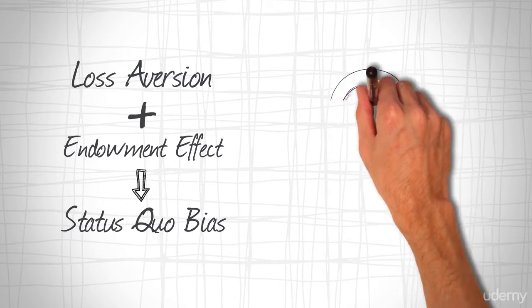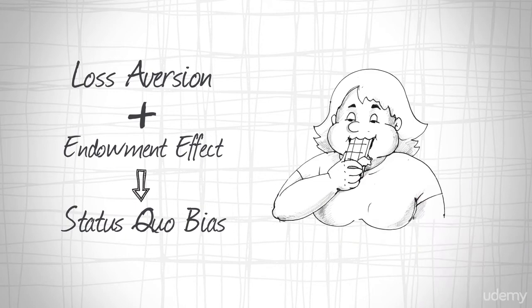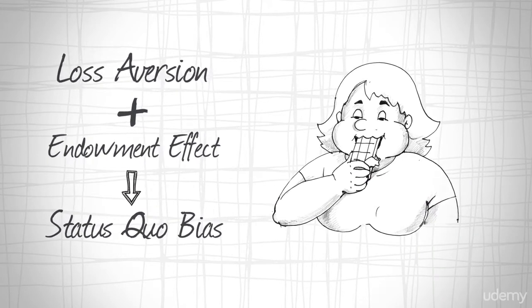Then, thanks to the restraint bias described in the last lesson, you'll be more likely to give in to temptation and eat it.